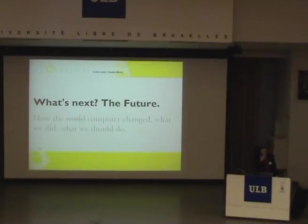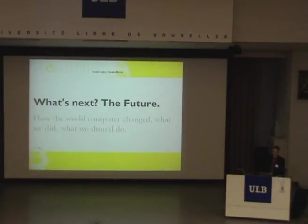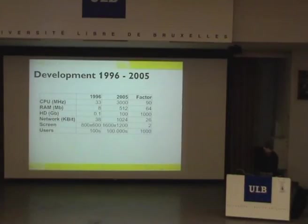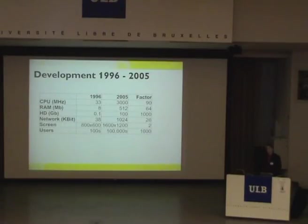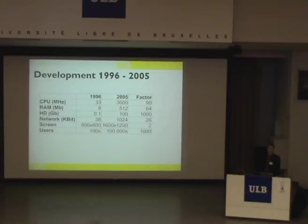What's next in the future? How the computer has changed, what we did, and what we should do — some thoughts and reflections on what we'll probably face in the next couple of years. If you look at computers in 1996 versus now in 2005, a couple of things changed significantly. CPUs went from average 33 MHz to 3 GHz — a factor of 90. We have 90 times the CPU. RAM went from an average 8 megabytes to 512 megabytes — a factor of 64.